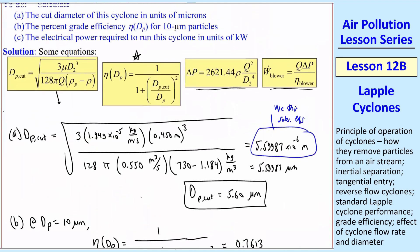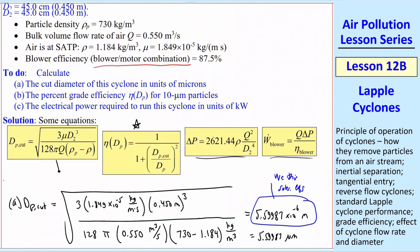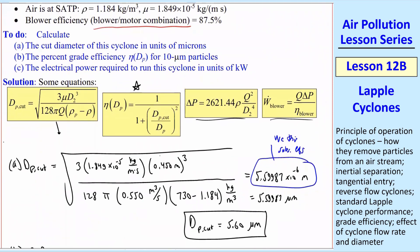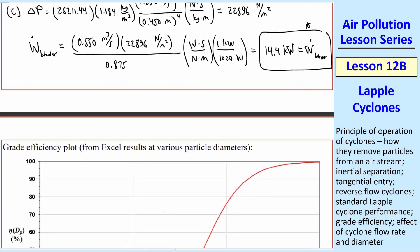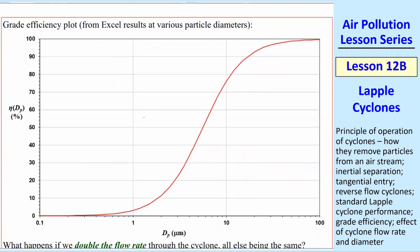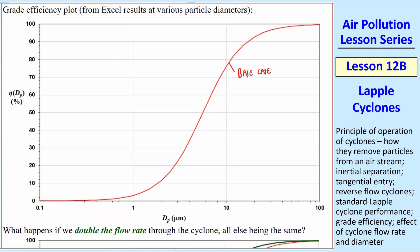One quick comment. The best thing to do with any of these kind of example problems is put everything into your software. Make sure you can get my answers. Let's repeat for a range of DPs, and I can plot that. I did that in Excel. There's my S-curve, and I'm going to call this red one here the base case. This is the one that we calculated for, the one in our example problem.